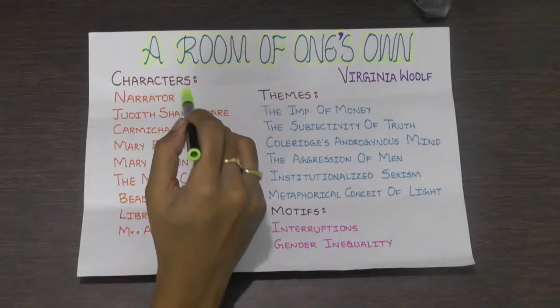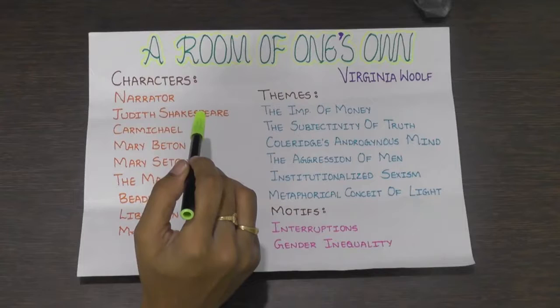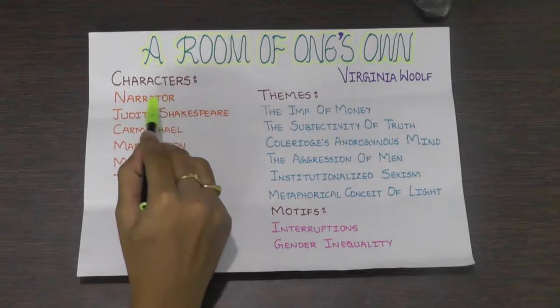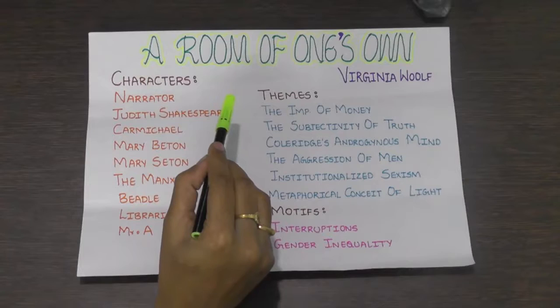The narrator, whom she calls Mary Benton, uses her alter ego to express her thoughts on what women ought to write — the fiction women write, the fiction written about women, or a combination of the three. A week prior, the narrator crosses a lane at the fictional Oxbridge University.